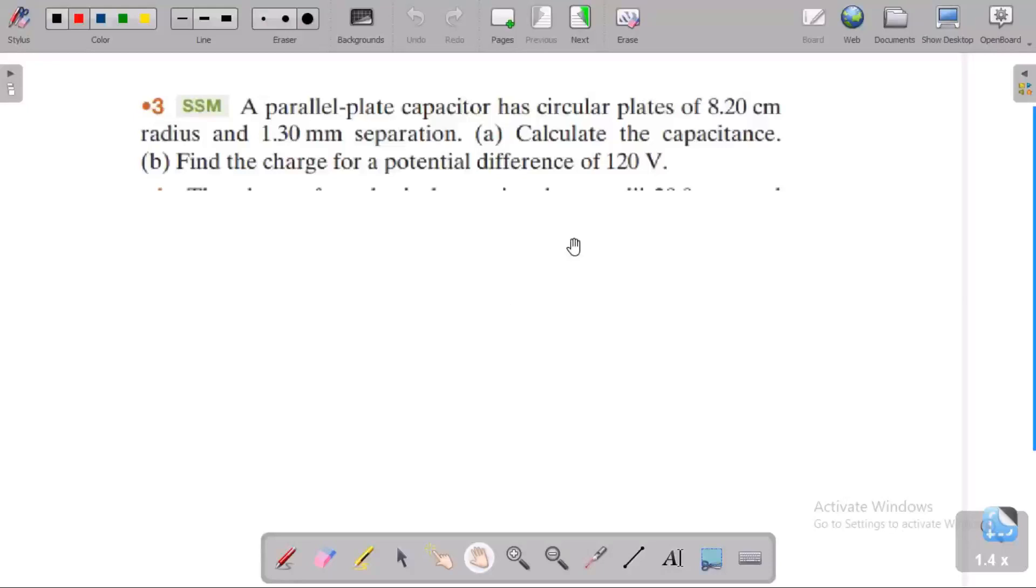Okay, a parallel-plate capacitor has circular plates. It's a plate, circular plate means it has an area that is circular. One plate here, another plate here. So this is plate one, this is plate two. This combination is known as a capacitor. The capacitor plate radius is equal to 8.2 centimeter.